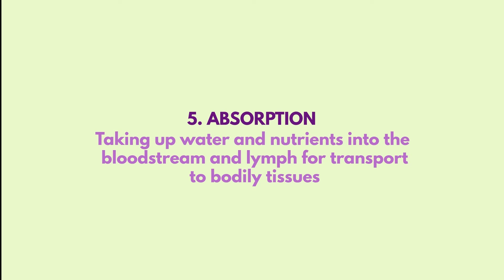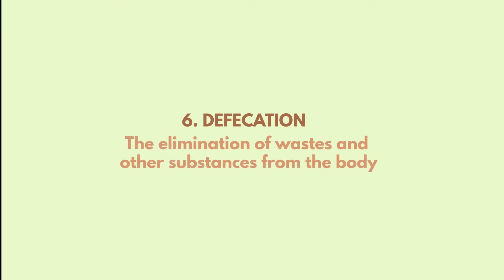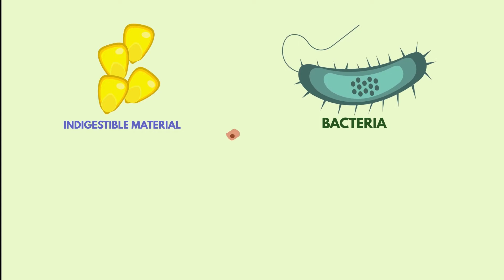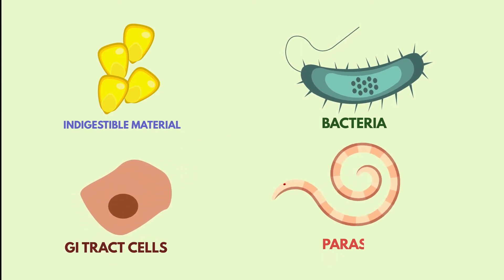The fifth process is absorption, which occurs almost exclusively in the small and large intestines and involves the taking up of water and nutrients into the bloodstream and lymph for transport to bodily tissues. The sixth and final process is defecation, the elimination of wastes and other substances from the body. Other substances can include indigestible material, bacteria, sloughed off cells from the GI lining, and parasites if the person is infected.